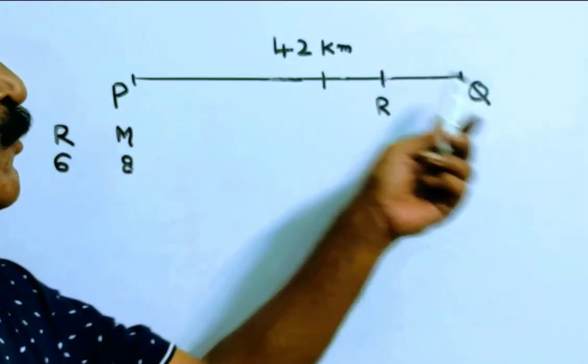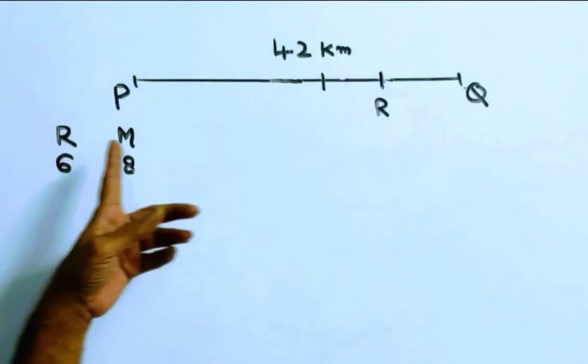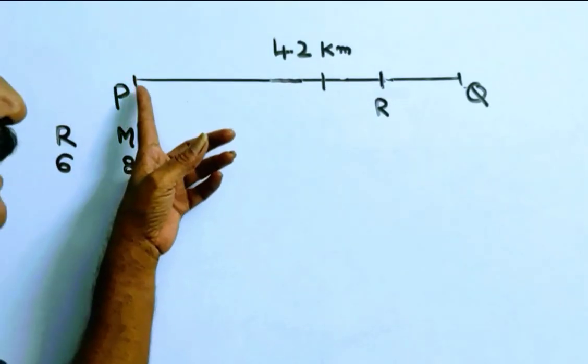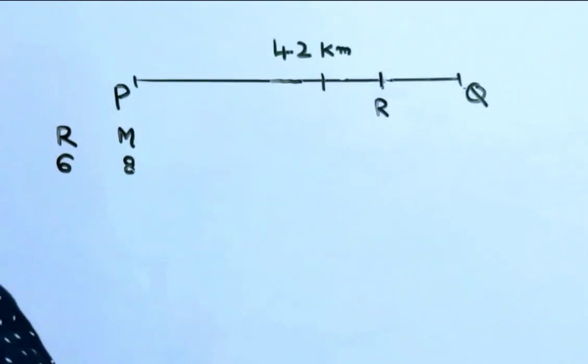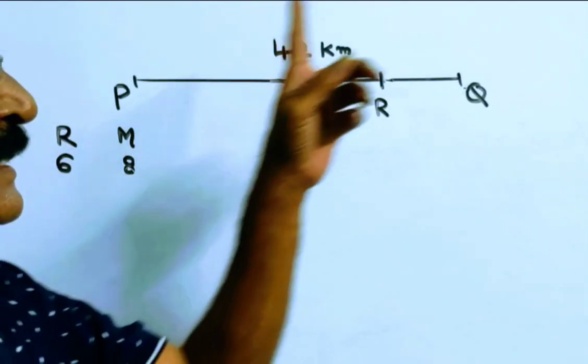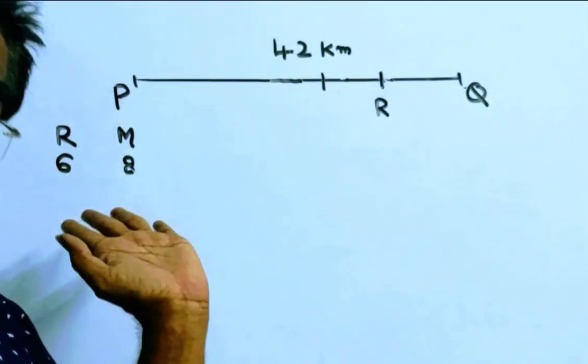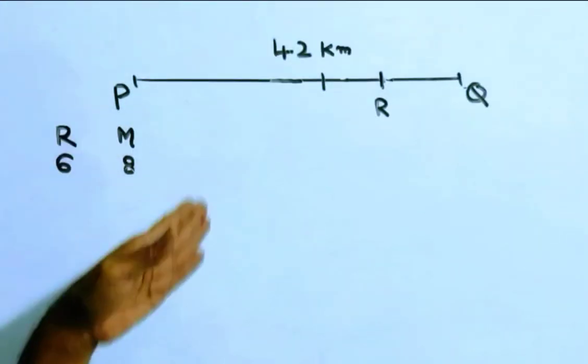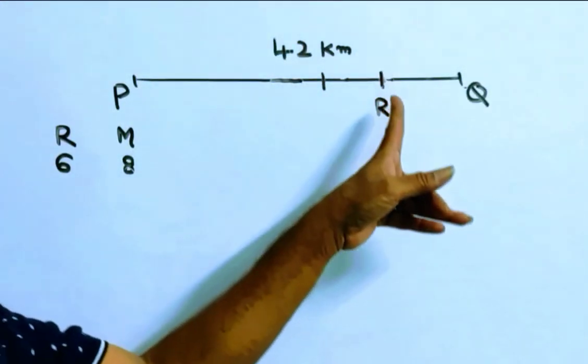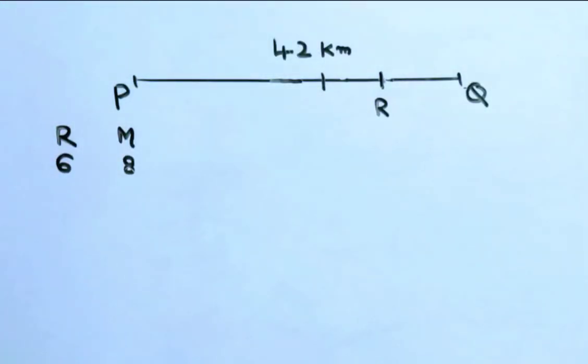Friends, two stations P and Q are 42 km apart. Rohit and Mohit start from P to Q at 6 kmh and 8 kmh speeds. Mohit reaches Q first, of course, since his speed is 8 kmh. Mohit reaches Q first and returns to meet Rohit at point R. We want the distance between P and R.